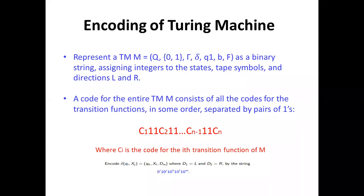Today we will discuss the encoding of a Turing machine. A Turing machine is represented by the seven-tuple (Q, sigma, gamma, delta, q1, v, F), where Q is the set of states, sigma is the input alphabet, gamma is the tape alphabet, delta is the transition function, q1 is the initial state, v is the blank symbol, and F is the set of final states.